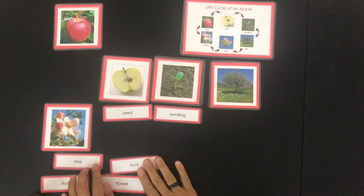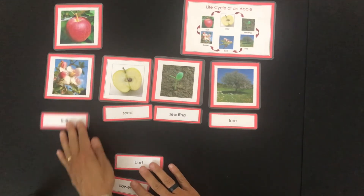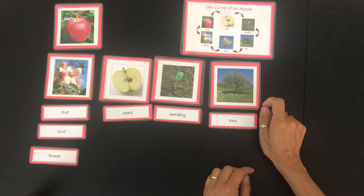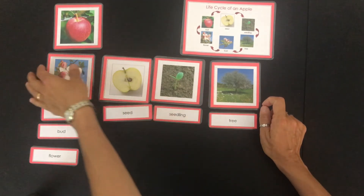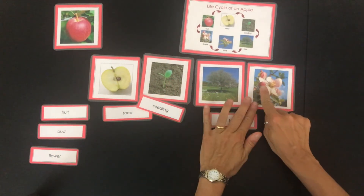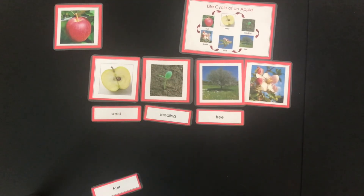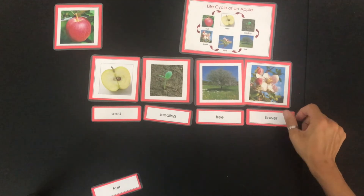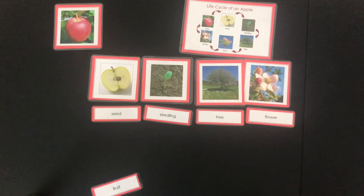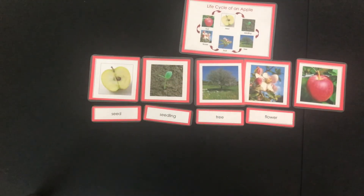I'm going to find the word that starts with a t: tree. What happens next? What grows on those tree branches? That's right — the bud. The bud, and then you see the flower. Remember the flower is what actually becomes the apple. So you've got the bud and then the bud opens up into a flower. And then the last part of the apple life cycle before it starts again with the seed is the apple, the fruit.